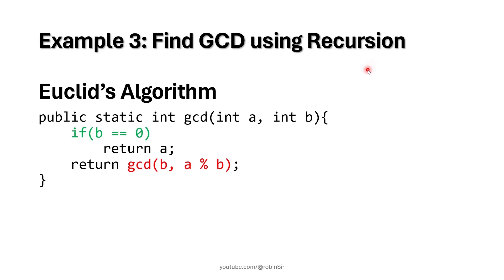Next is finding the GCD using recursion, following Euclid's algorithm: keep dividing until the remainder is 0, then take the last divisor as the GCD. The function takes two numbers a and b. If b is 0, the remainder is 0 and we return a as the GCD. Otherwise, we update: the previous divisor becomes the new dividend, and a modulus b — the remainder — becomes the new divisor. This continues until the remainder is 0.